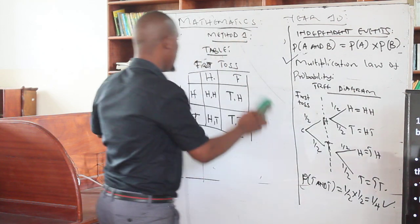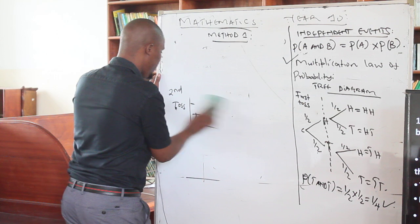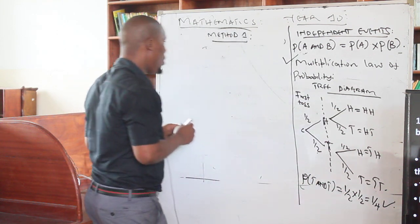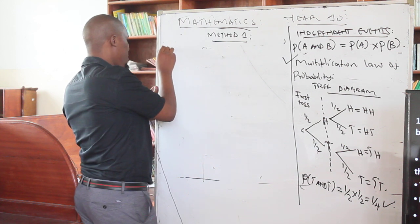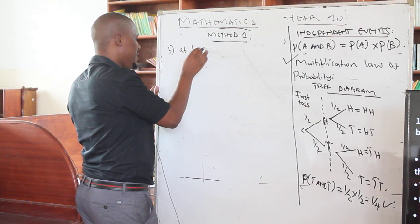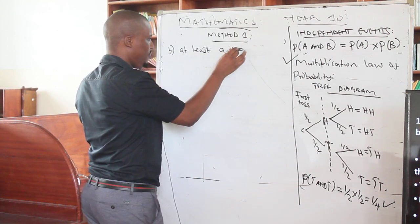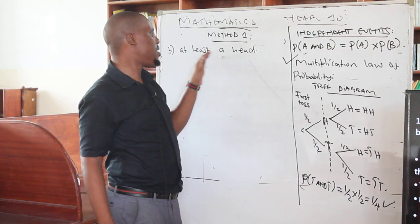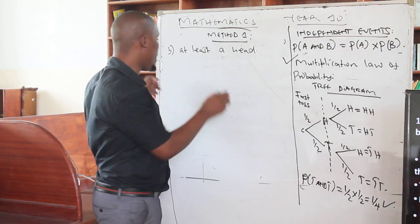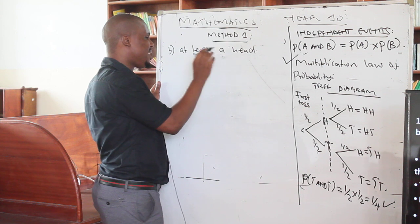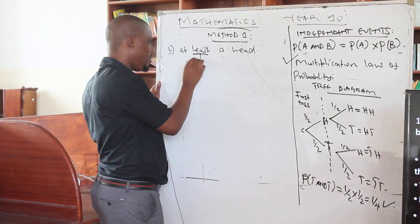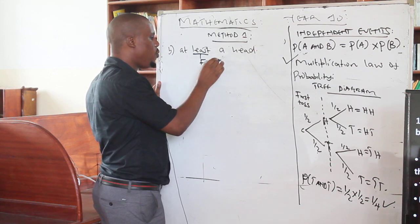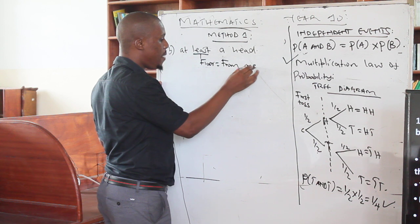There are some keywords I want to emphasize. The question asks: what is the probability of getting at least one head? The word 'at least' is important — some people overlook this concept. 'At least one head' means from one and above.